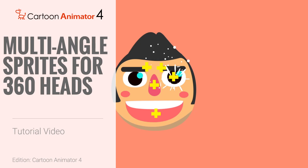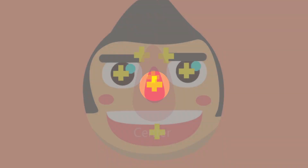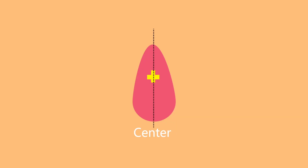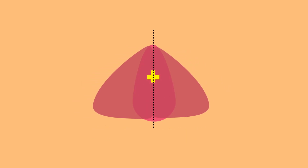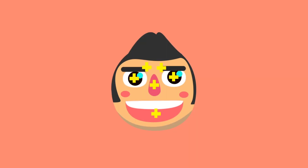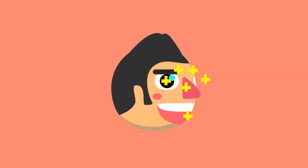In this tutorial we're going to talk about how to enhance your 360 heads with multiple angle sprites. Every sprite on your character's head is attached to a bone. The sprite bones are not only an indicator of transform position but also a reference point when flipping the sprite. In order to achieve the best results, make sure these multi-angle sprites have been aligned with a center flip pivot point.